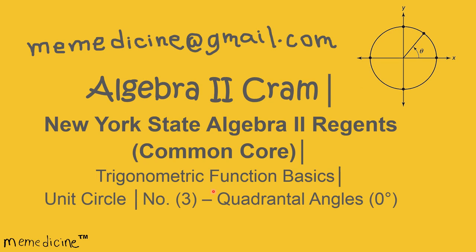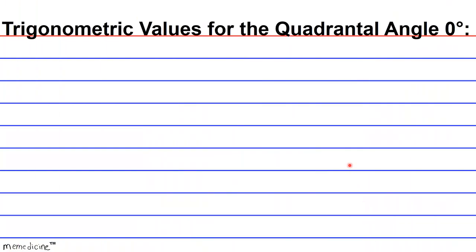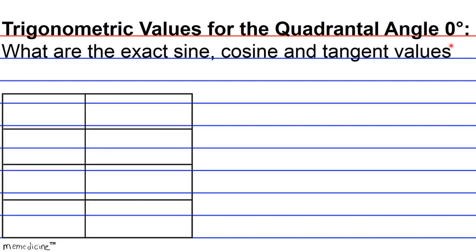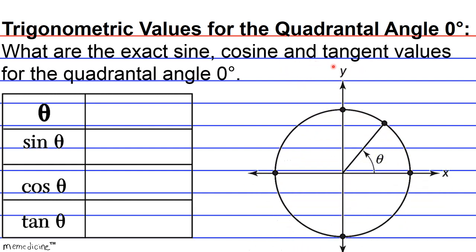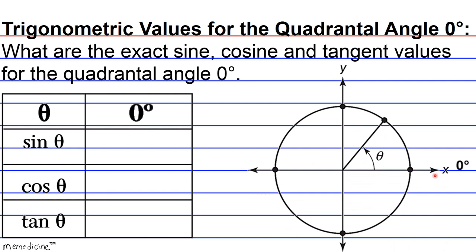All right, so let's delve into the concept of the unit circle in quadrantal angles, specifically 0 degrees. Trigonometric values for the quadrantal angle 0 degrees. What is the exact sine, cosine, and tangent value for the quadrantal angle 0 degrees? Definitely press pause if you need to, and I'll give you a moment to think.